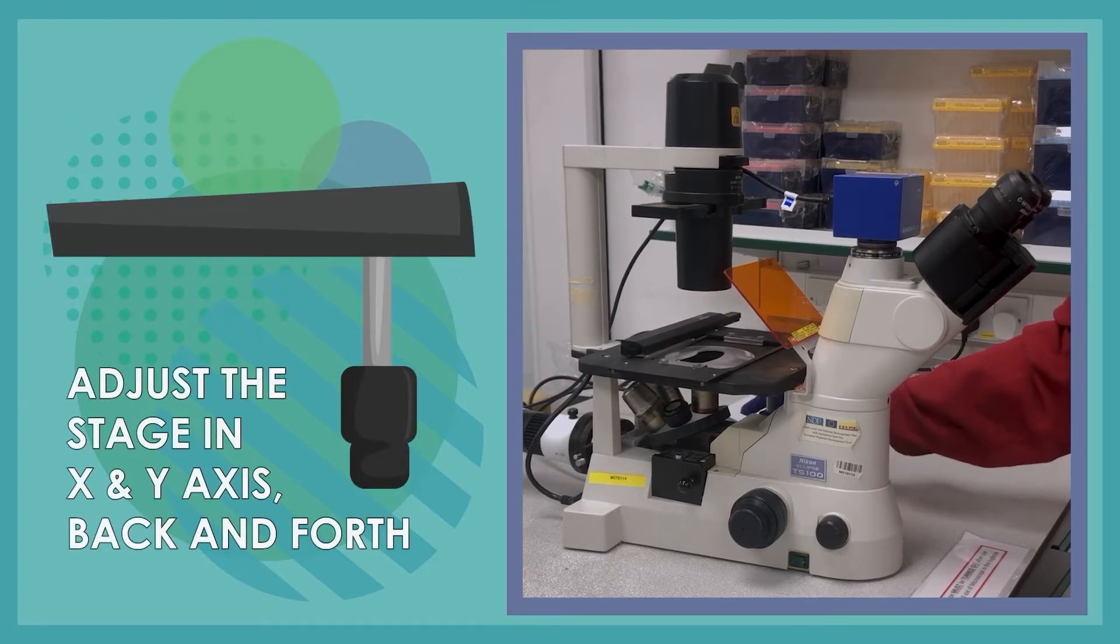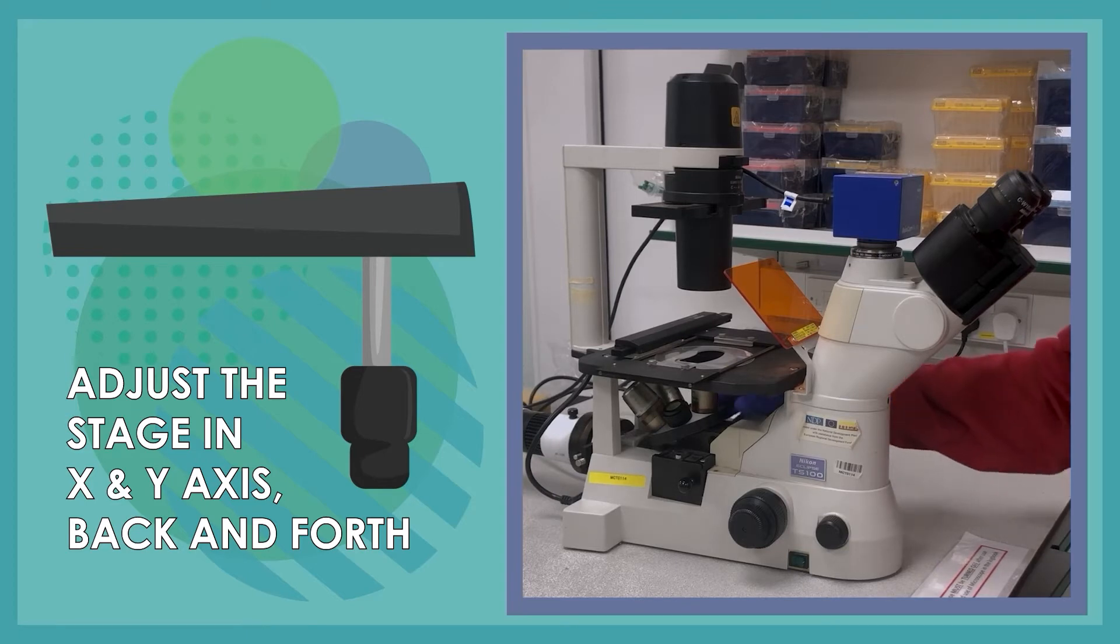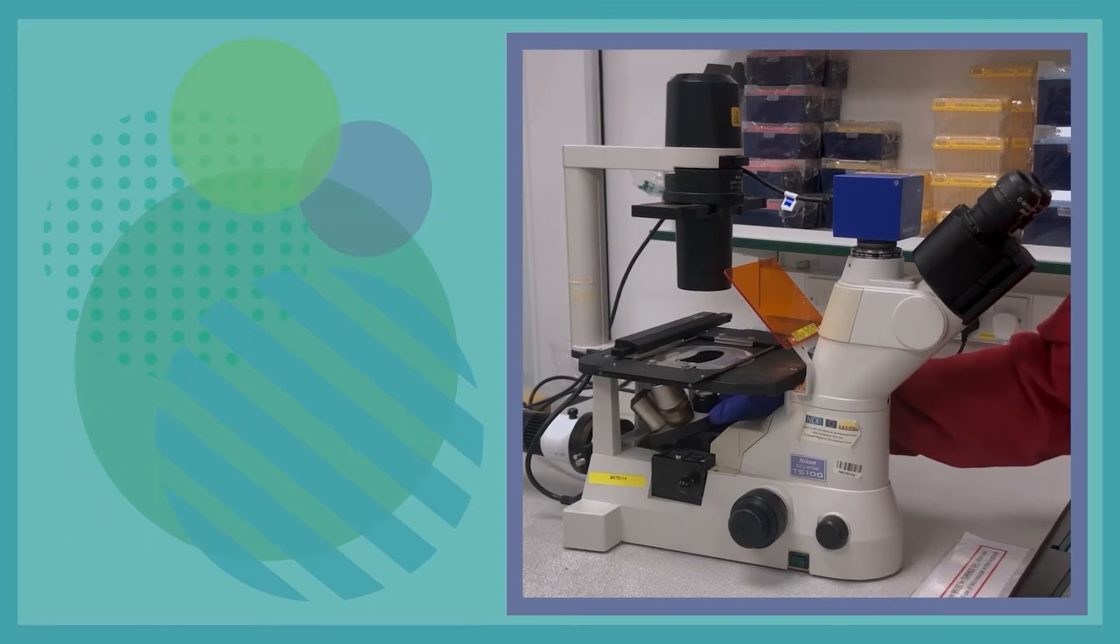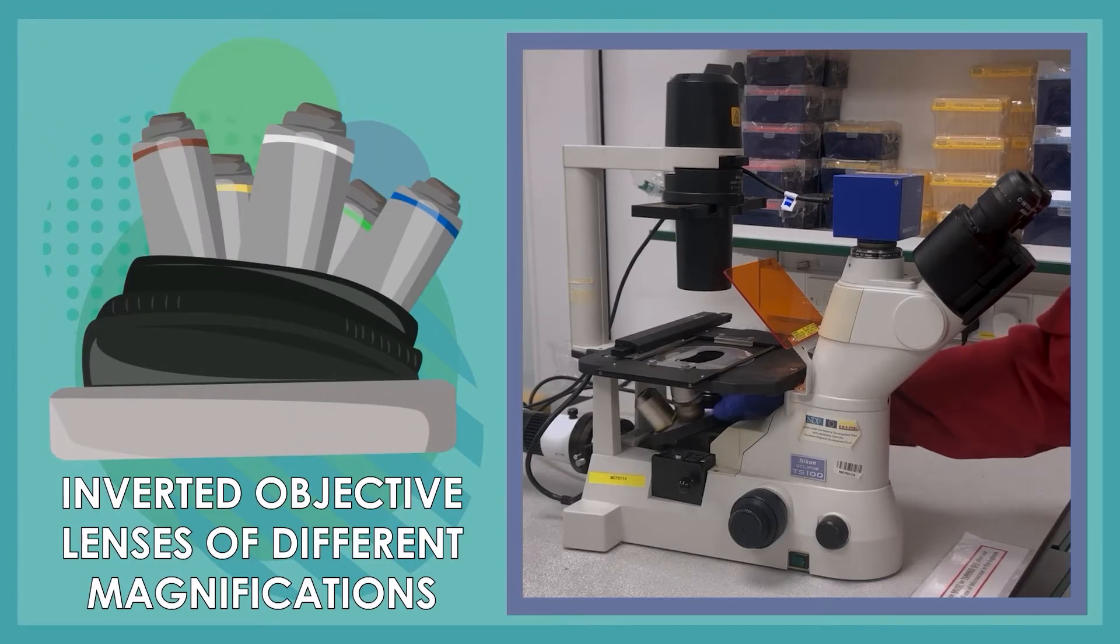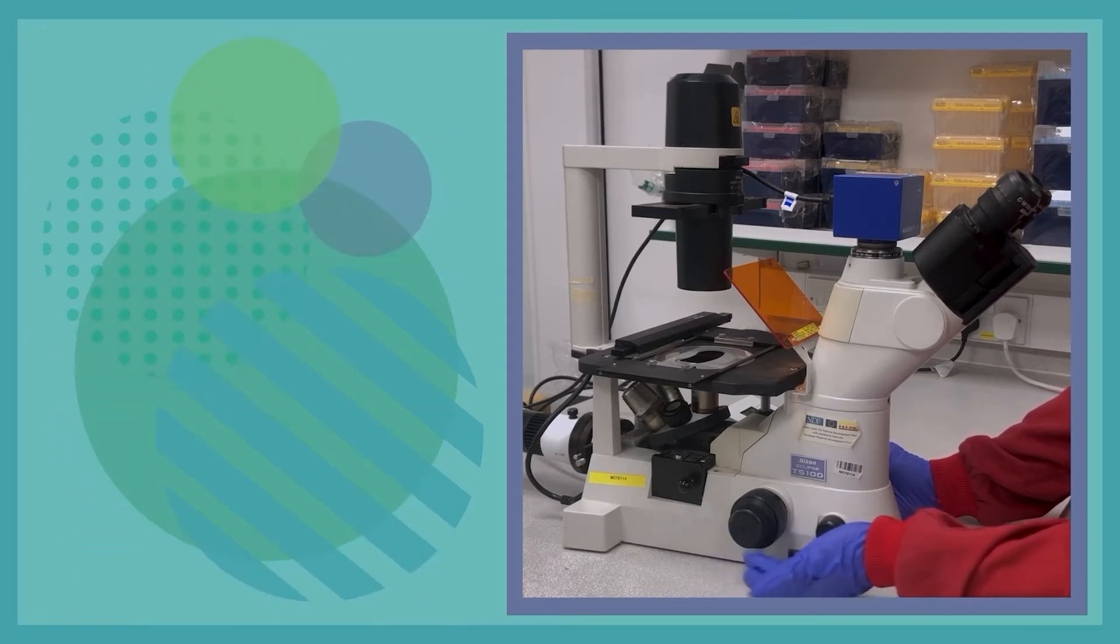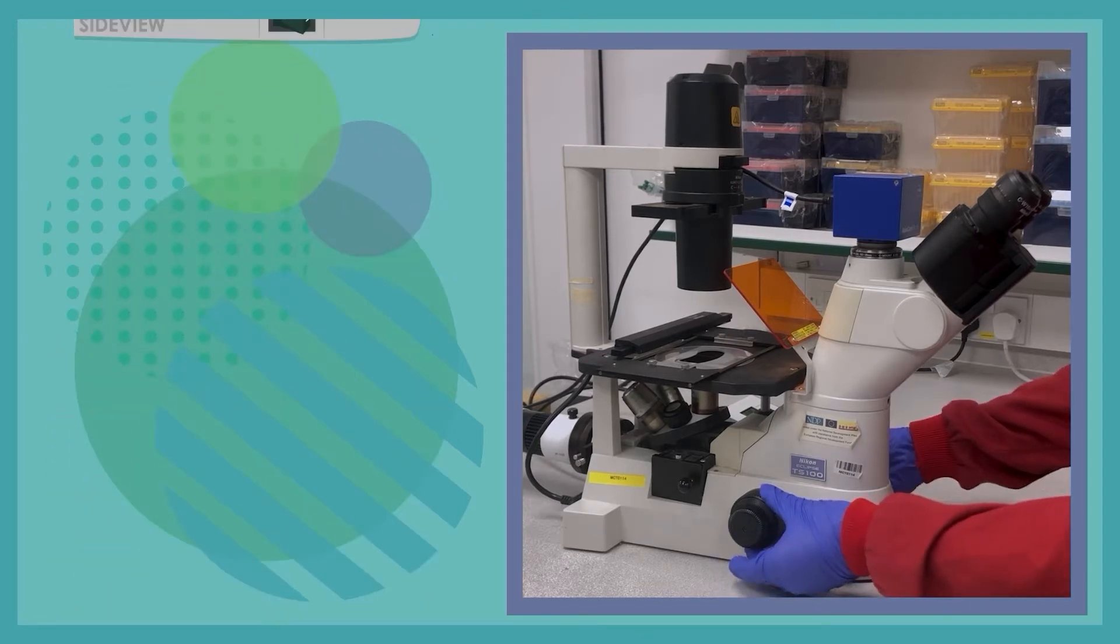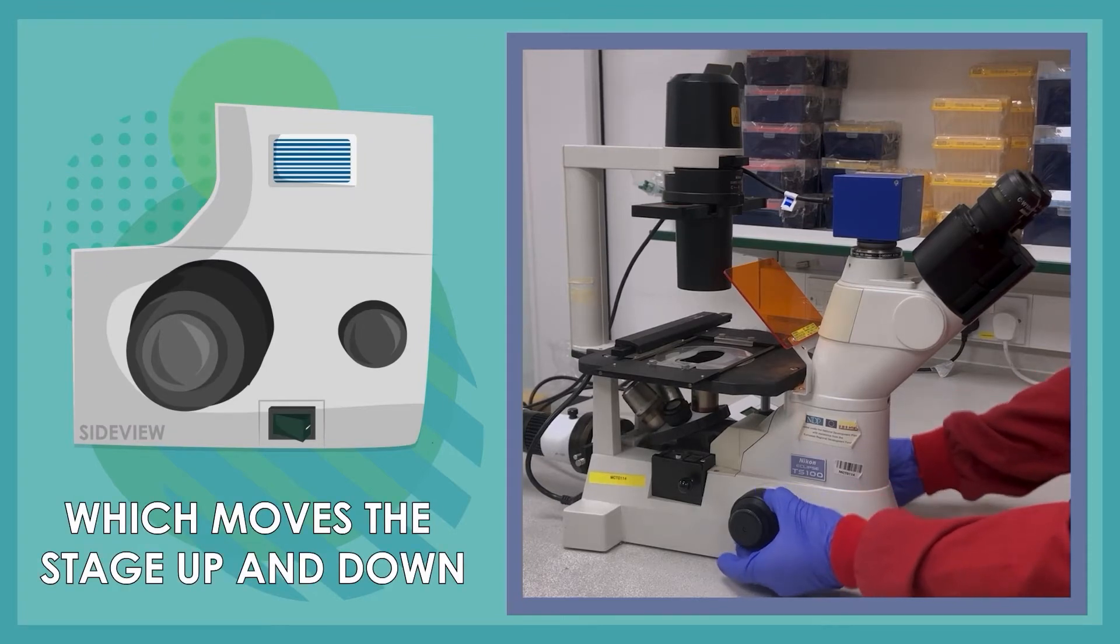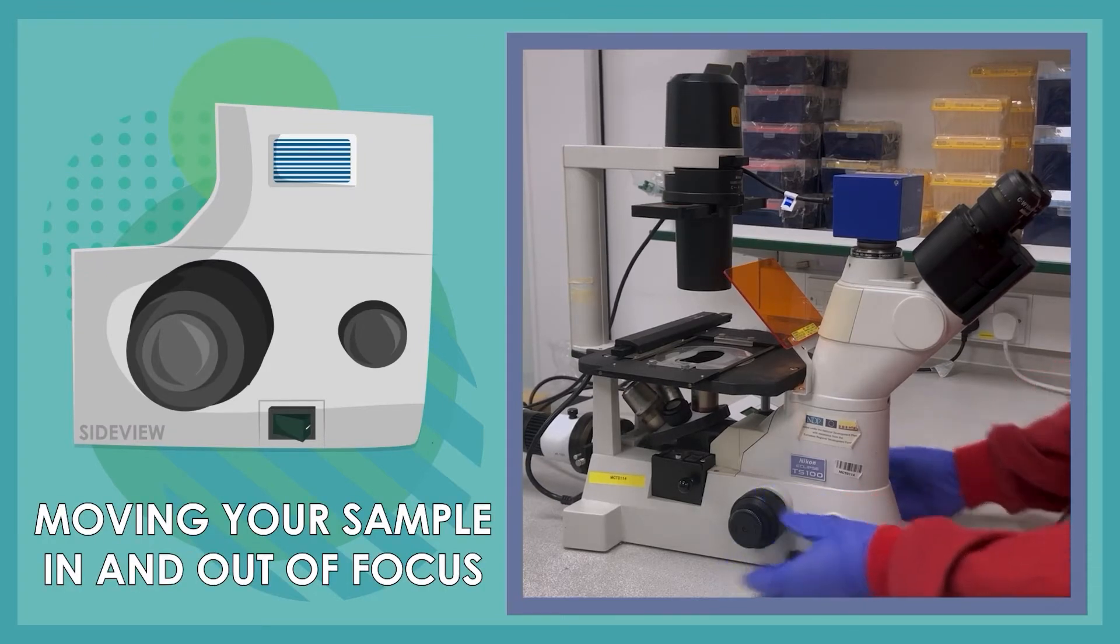You can adjust the stage in an x and y axis back and forth using the adjustment knob on the side. Below the stage are the inverted objective lenses of different magnifications which let you view your cells at different levels. Additionally, we also have the coarse and fine focus knob which moves the stage up and down, moving your sample in and out of focus.